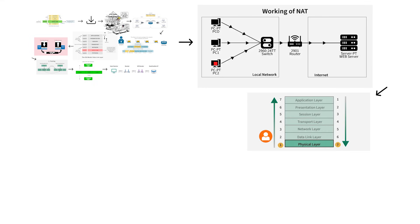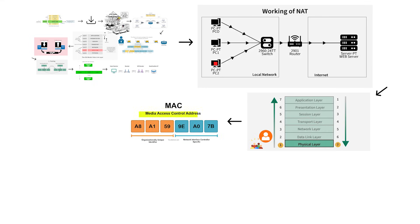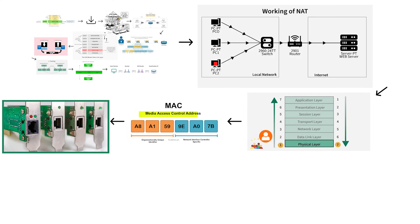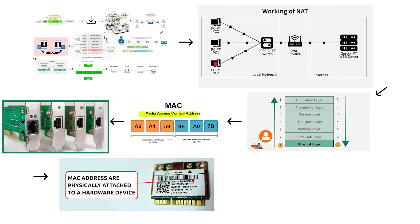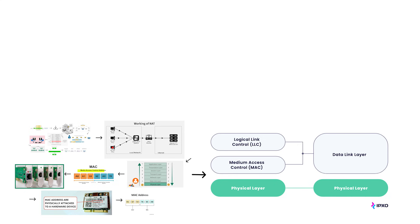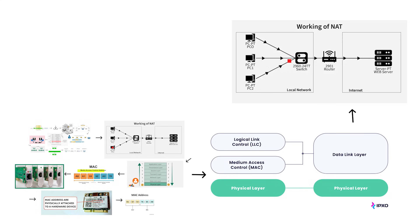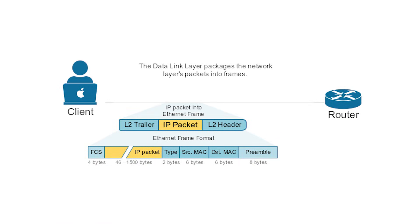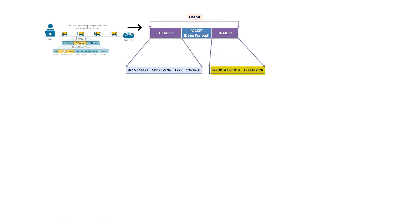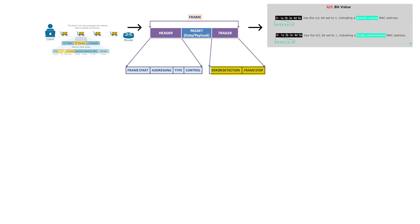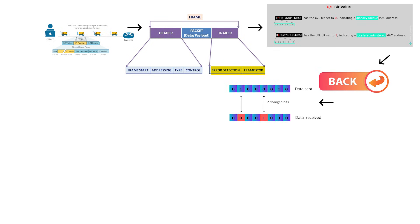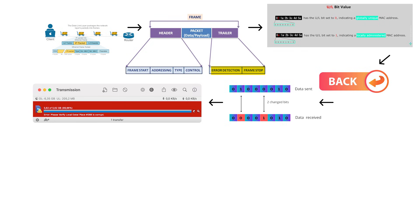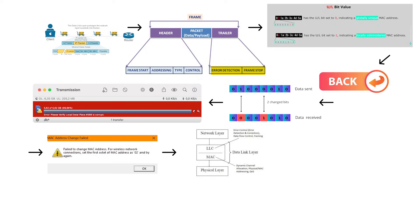Here's the key thing: Level 2 people understand MAC addresses — Media Access Control addresses — that Level 1 people don't. Every network card and every device has a unique MAC address burned into it at the factory. It's like a serial number for your network hardware. The data link layer uses these MAC addresses to make sure data gets to the right device on your local network. When your computer wants to send data, the data link layer wraps it in a frame. At the front, it adds the sender's and receiver's MAC addresses. At the back, it adds error detection bits called a frame check sequence. If errors are detected, the frame gets thrown out and has to be resent.